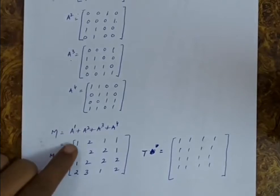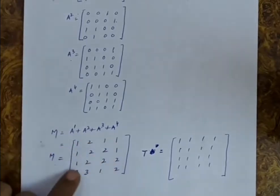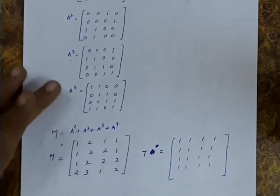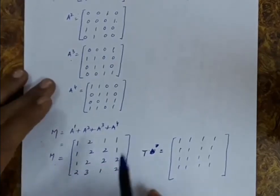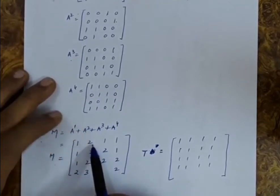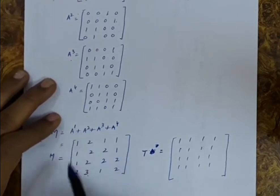After adding these four matrices, we get the M matrix with entries such as 1, 2, 1, 1, 1, 1, 2, 2, 1, 1, 2, 2, 2, 3, 1, 1. This M matrix represents all the paths — for example, there is only one path between vertices 1 and 1, two paths between 1 and 2, and three paths between 4 and 2. So M tells us the total number of paths.